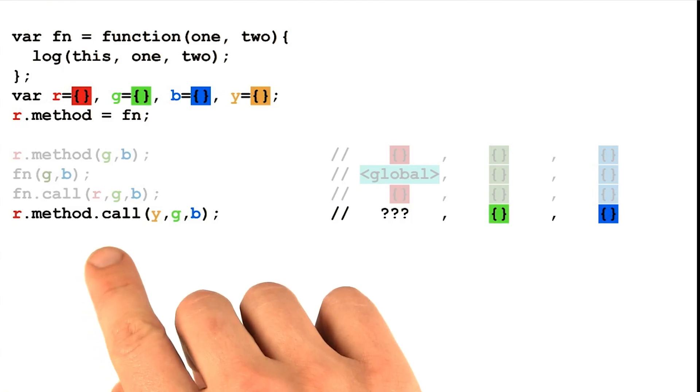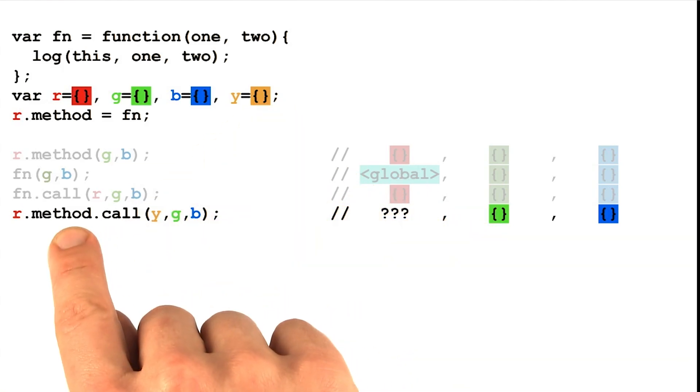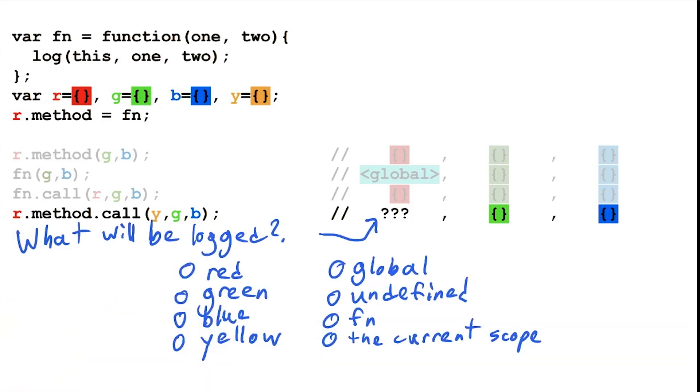So what would happen if we used dot call on a function that was also being accessed as a property? Here, we're using dot call to pass in this new yellow object, but that method was already found as a property of the red object.